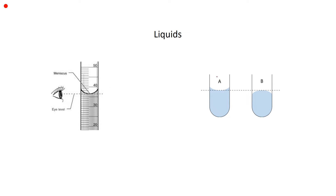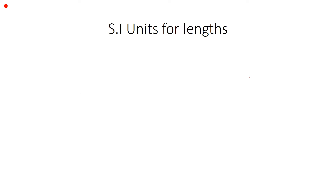These are just examples of meniscus. For A, which is water and most liquids, the meniscus is usually curving downwards. But for B, there are certain liquids where the meniscus curves upwards, such as mercury.